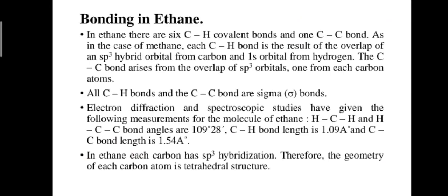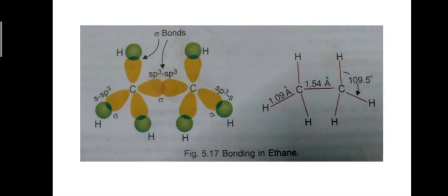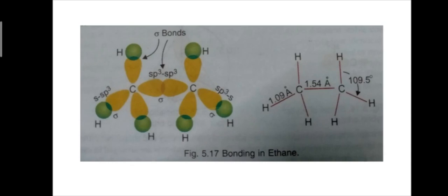Next, bonding in ethane. In ethane, there are six C-H covalent bonds and one carbon-carbon single bond. As in the case of methane, each carbon-hydrogen bond results from the overlap of an sp3 hybrid orbital from carbon and the 1s orbital from hydrogen. The carbon-carbon bond arises from the overlap of sp3 orbitals, one from each carbon atom.